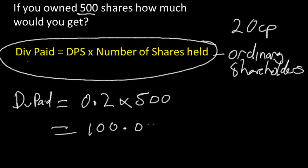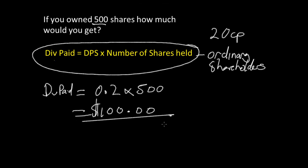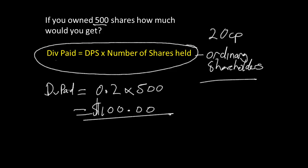That means you get 100 bucks. Quite simply, later on we'll talk about tax, but that's what you get in your pocket. This is for ordinary shareholders. The ordinary shareholders and preference shareholders are slightly different.